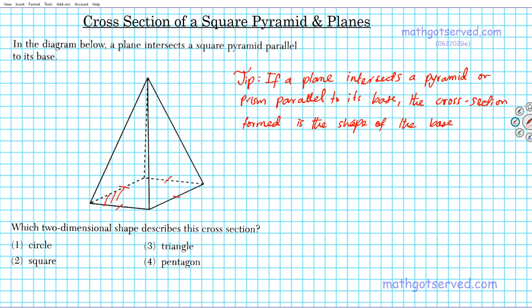Since this is a square pyramid, the resulting shape for the intersection will also be a square. If it were a circular pyramid, the resulting shape will be a circle. If it was a hexagonal pyramid, the same principle holds. It also applies to right prisms too.